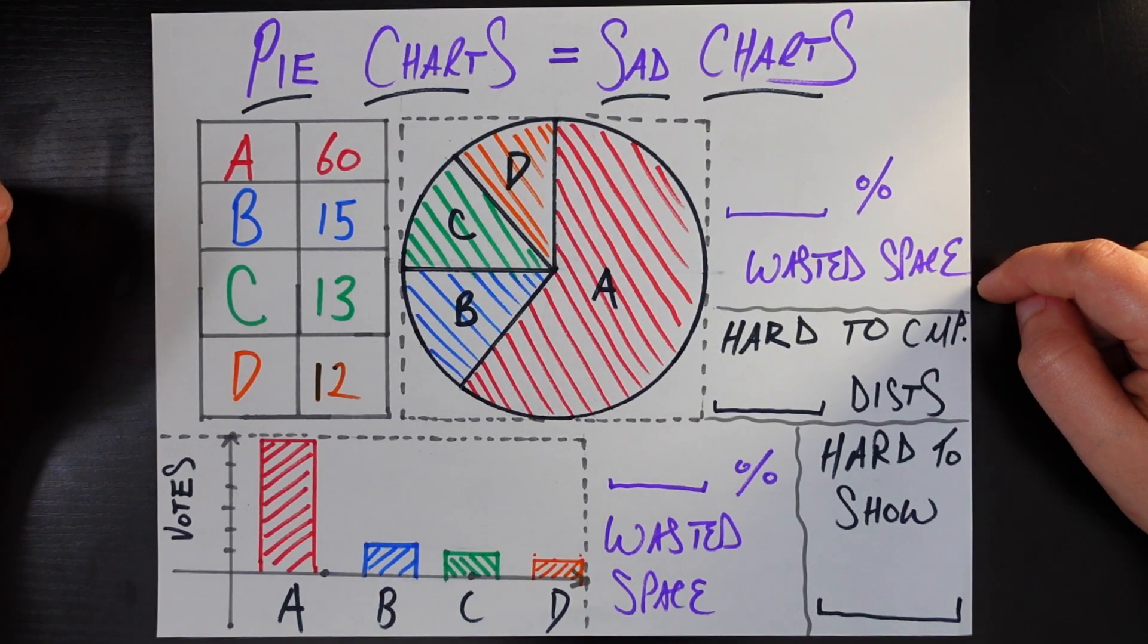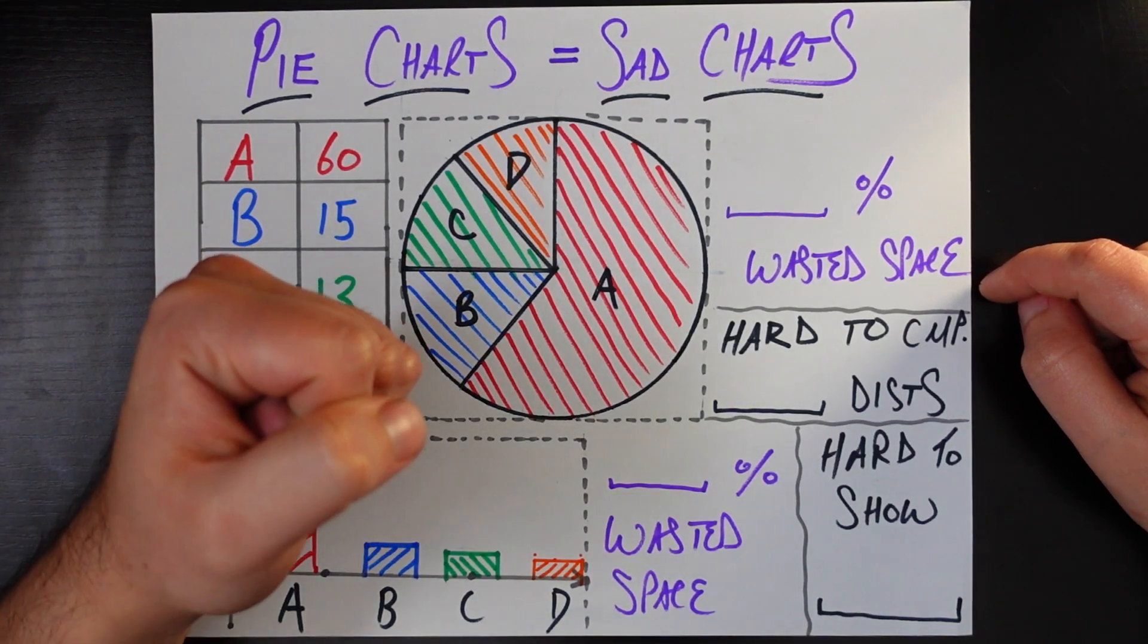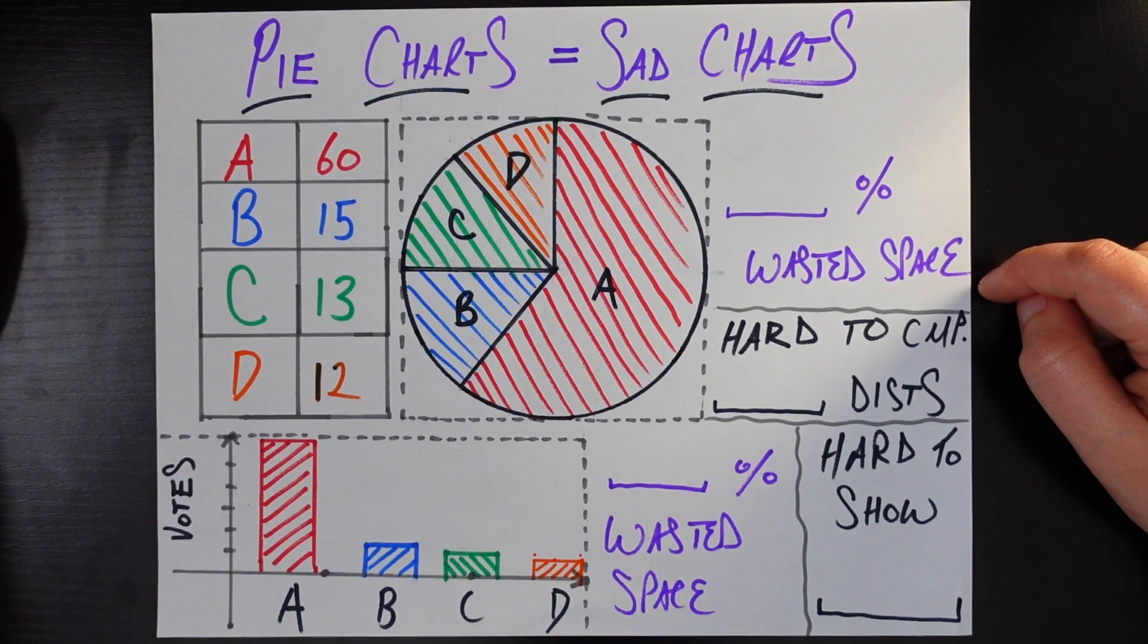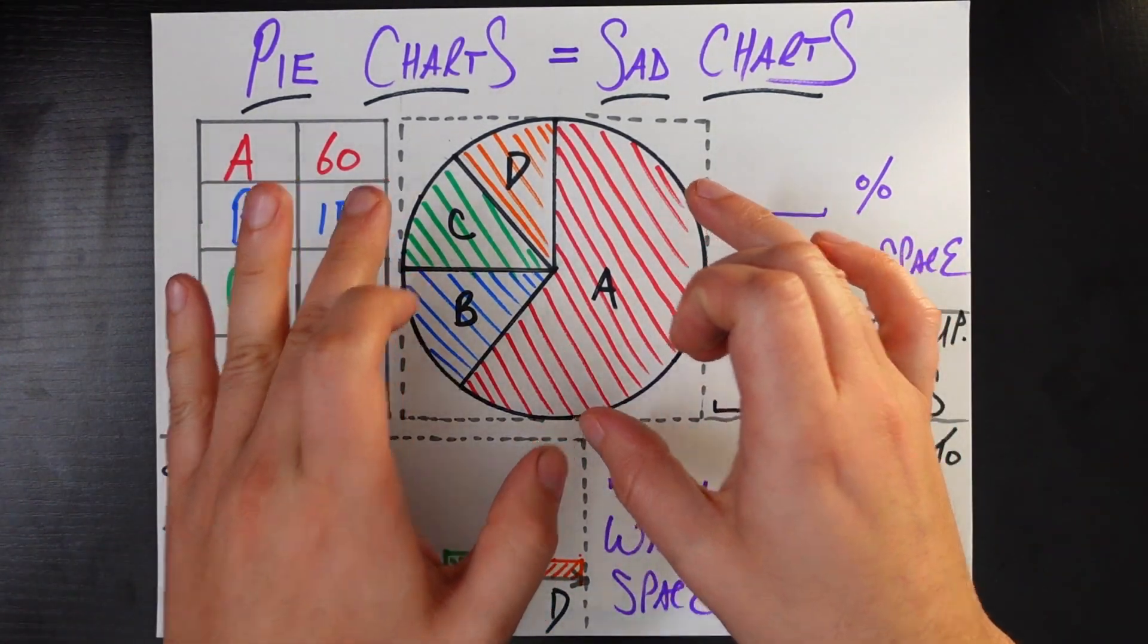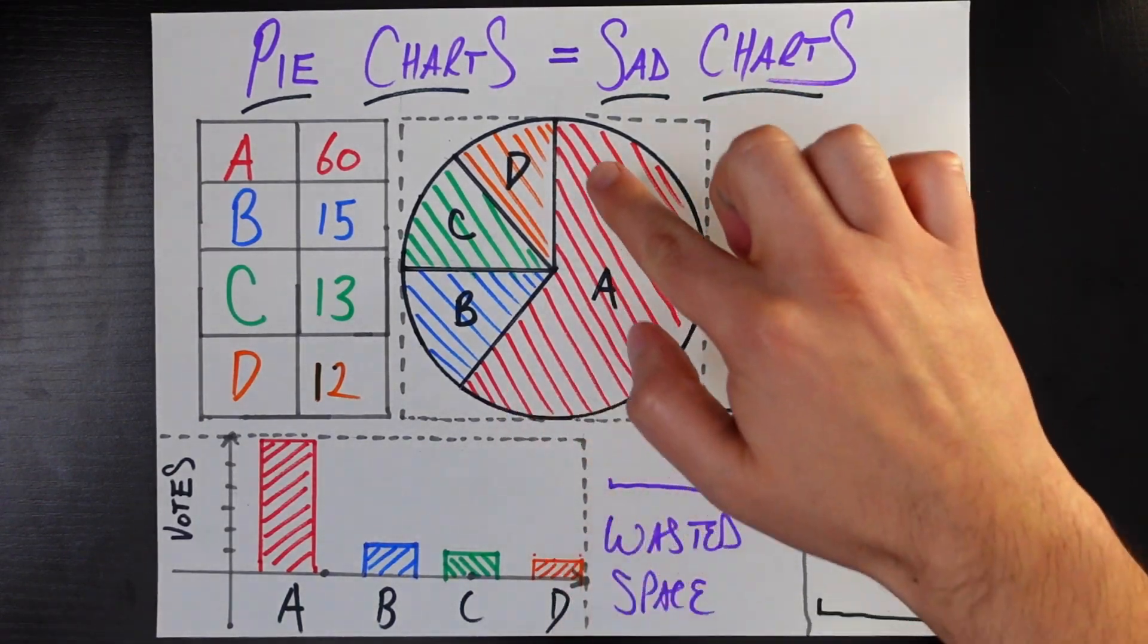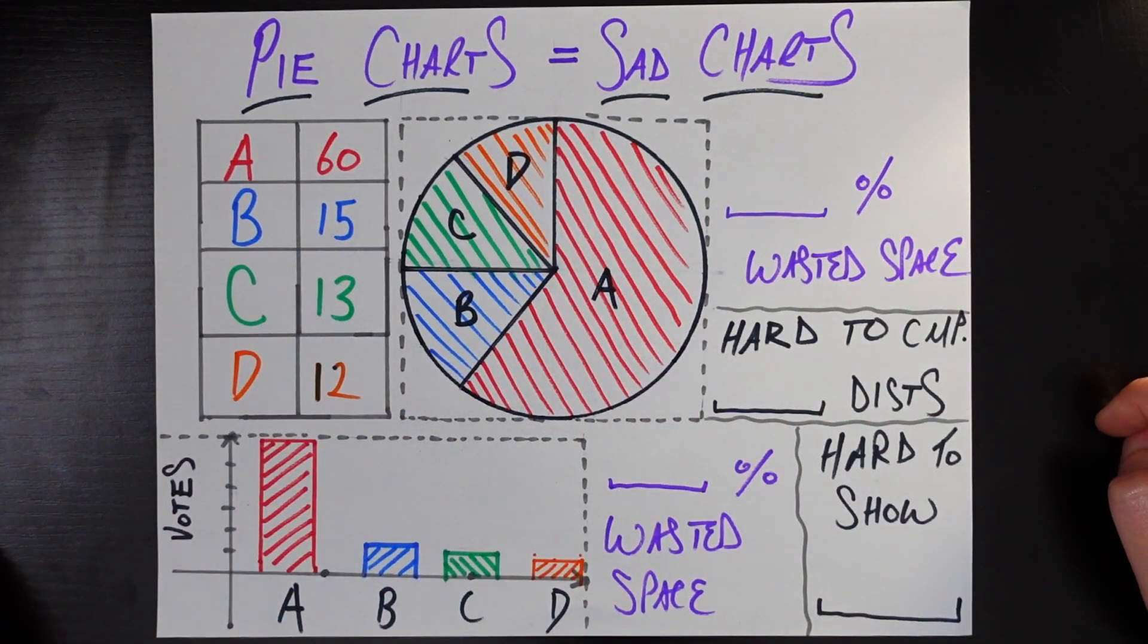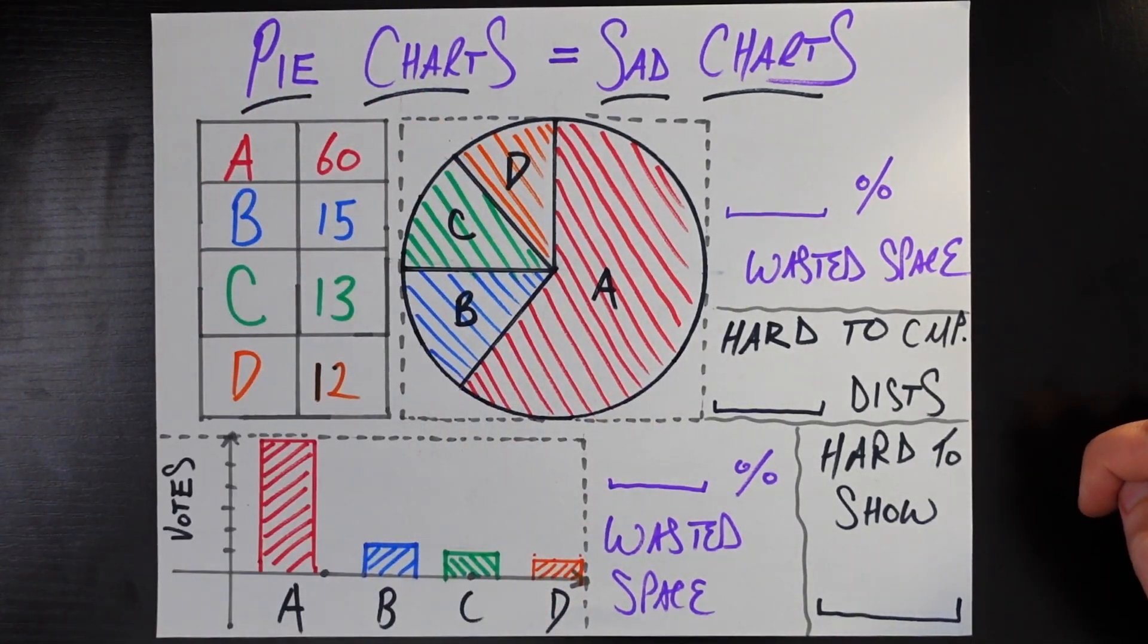You have a couple options here. The first option, the wrong option, is to use a pie chart. So if you drew a pie chart, I can't remember the last time I've drawn a pie chart on a piece of paper, but I did it for you all. It looks like this here. So you have some section, so 60 out of the total for A, B, C, and D respectively.